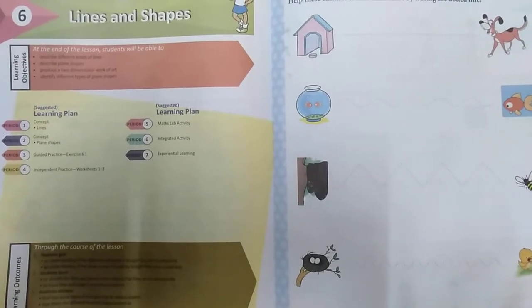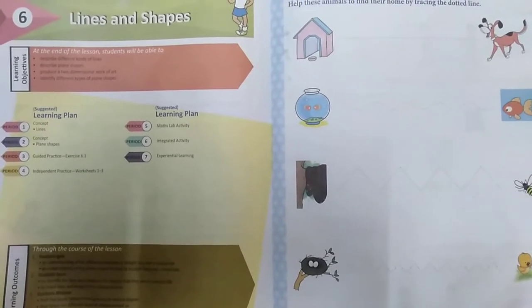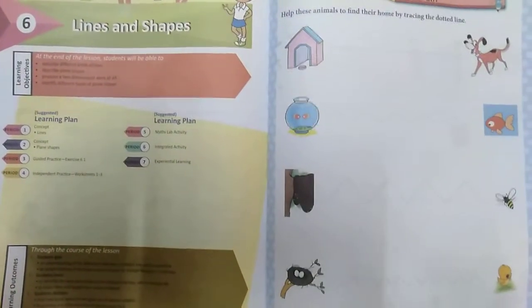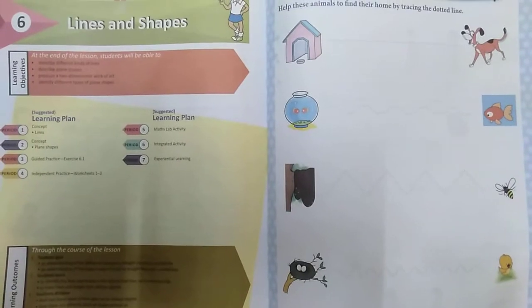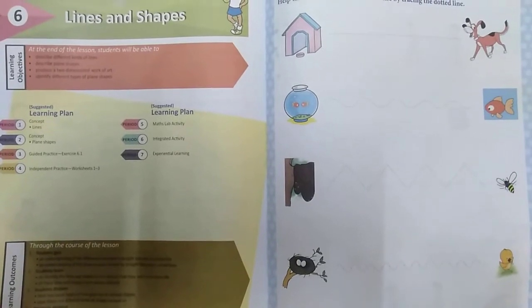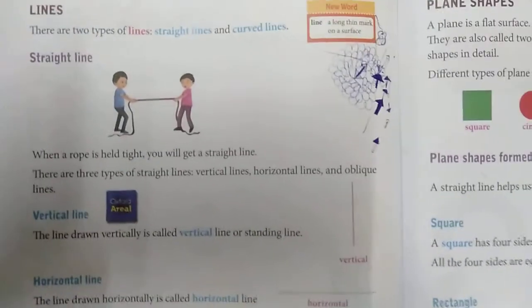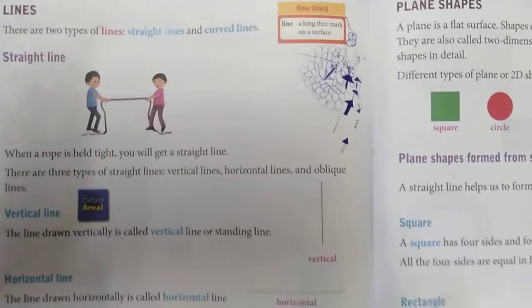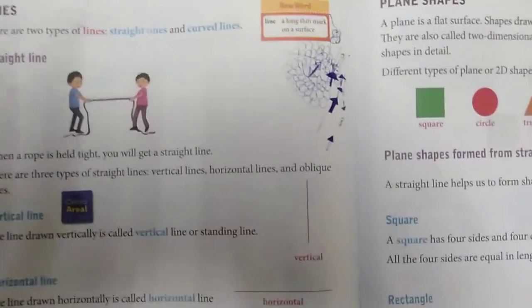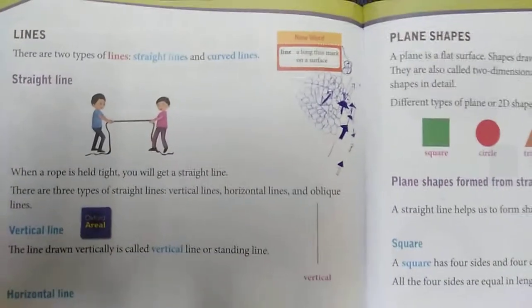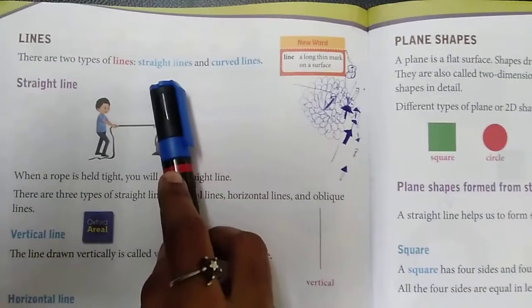Listen carefully. If you have any doubt, you have to ask after this class — you can call and ask. Now see here: lines and shapes. Already you know, right? Lines means what? There are two types of lines: straight line and curved line.